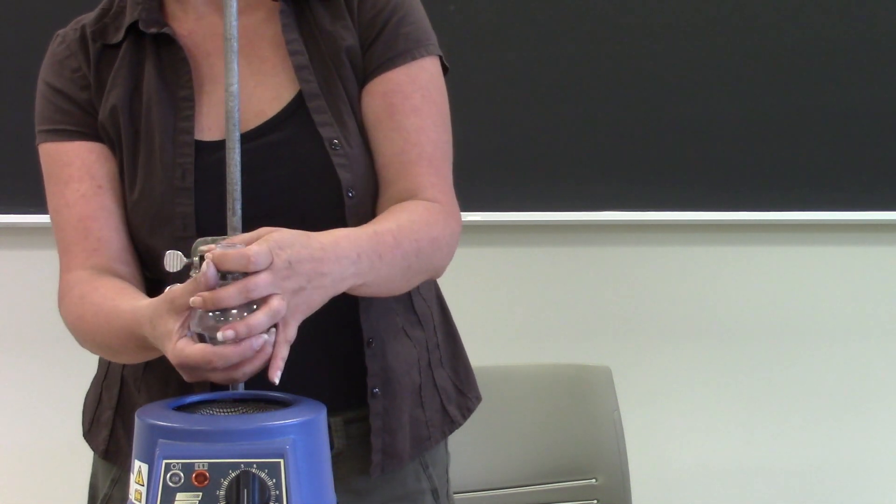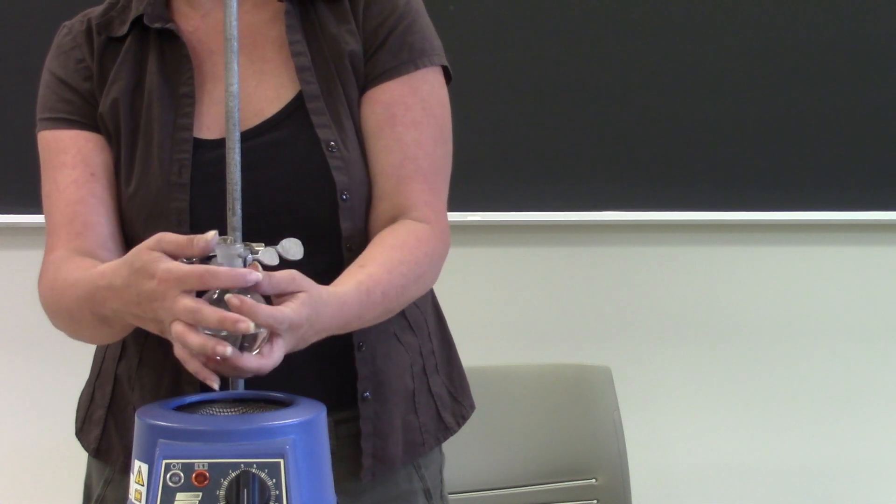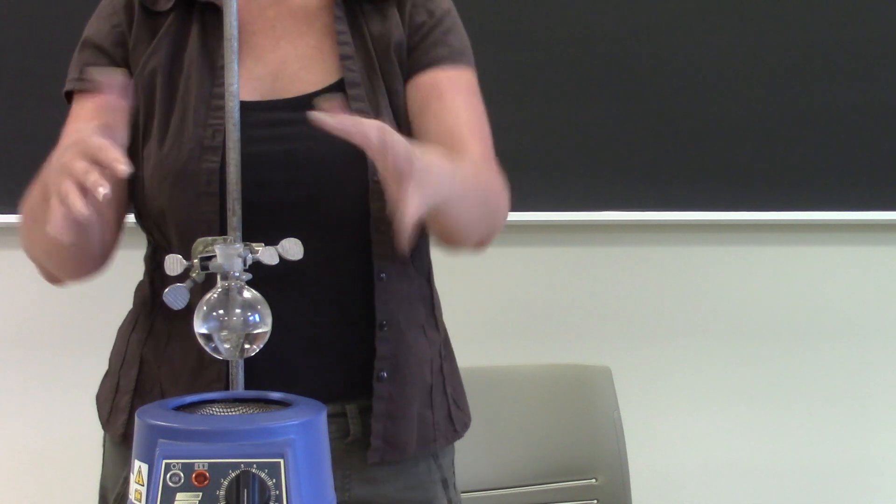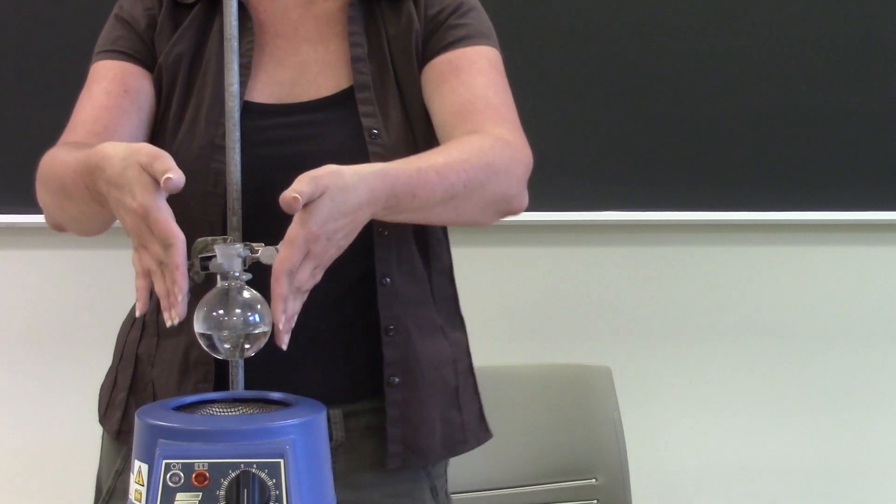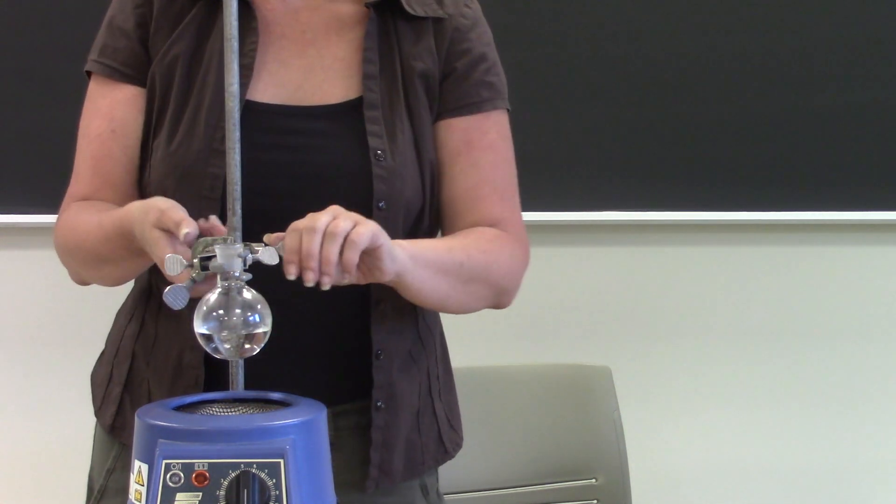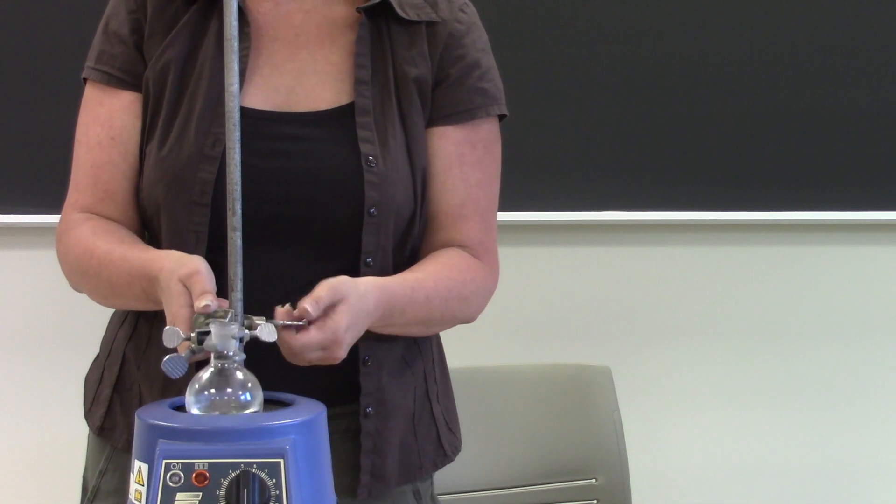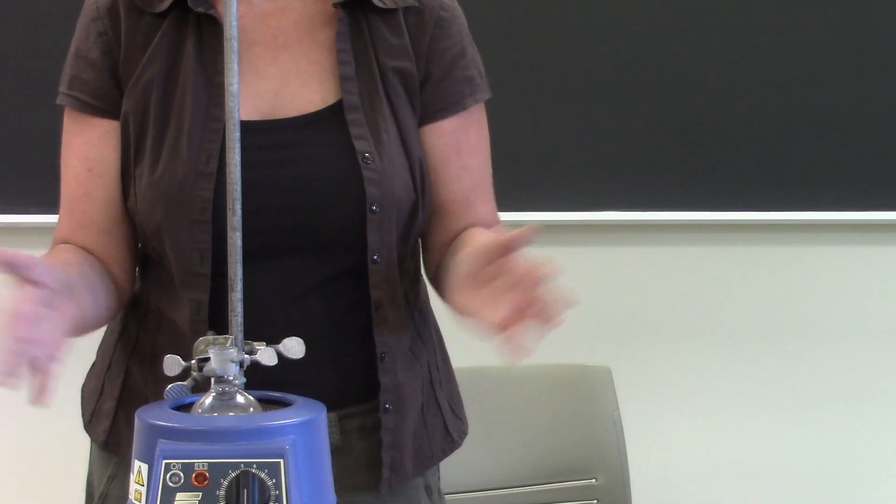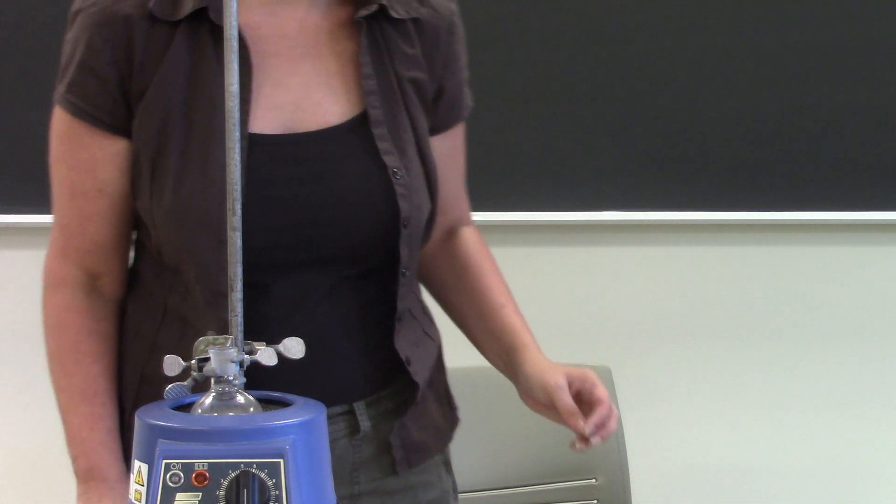The other thing I'm going to do is make sure that the neck of the flask is going straight up and down because you don't want your apparatus to be going off at an odd angle, it should be straight up and down. So now that I've got that really tightly clamped I'm going to lower it into the heating mantle and there's my round bottom flask.